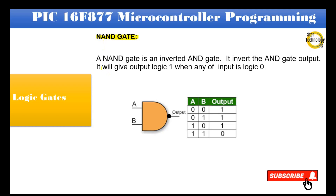NAND gate: A NAND gate is the inverse of an AND gate — it inverts the AND gate output. It will give output logic 1 when any input is logic 0. Symbol: two inputs, one output, with an inverter sign. Truth table: If both A and B are logic 0, output is 1. If A=0 and B=1, output is 1. If A=1 and B=0, output is 1. If both A and B are logic 1, output is logic 0.